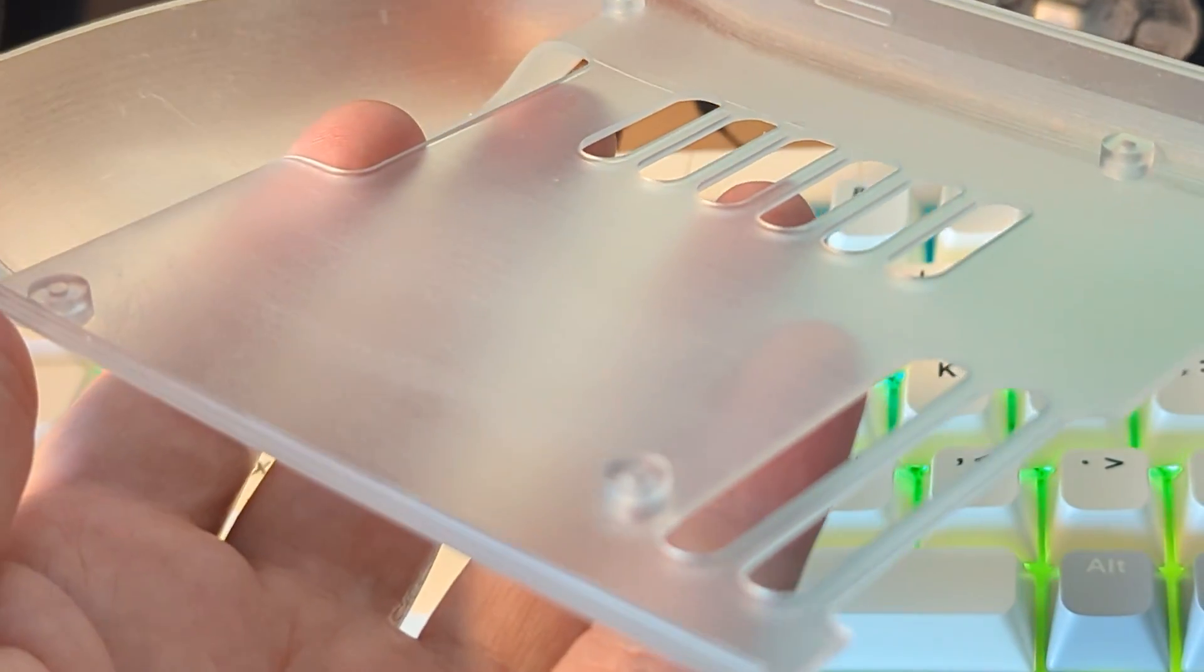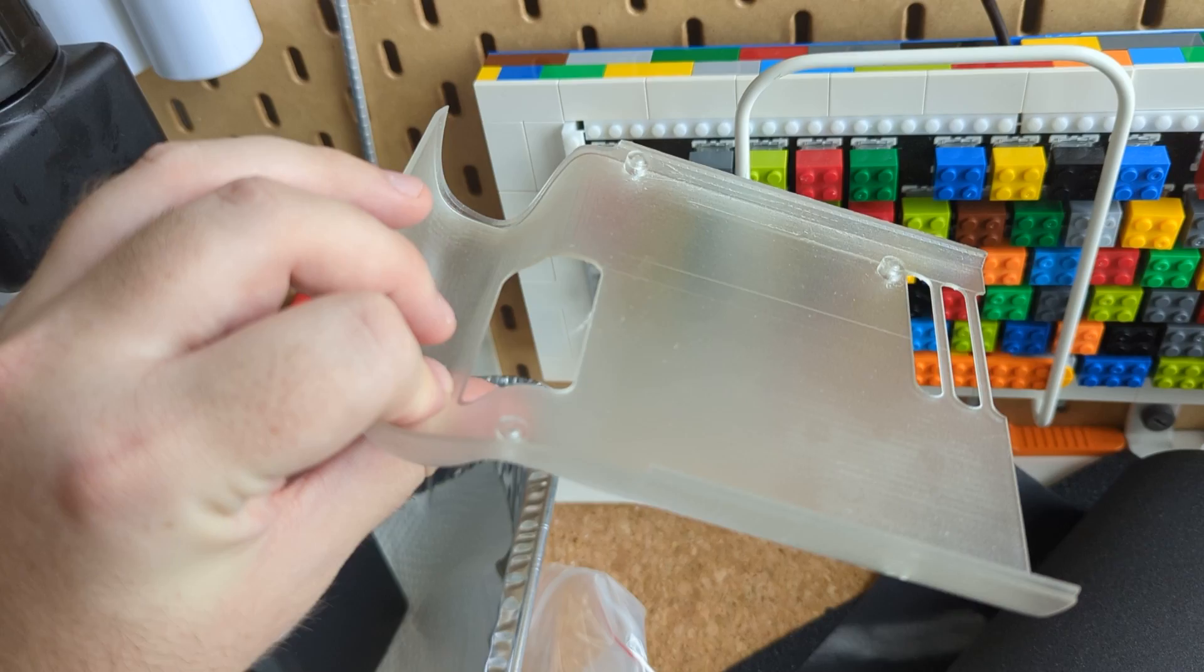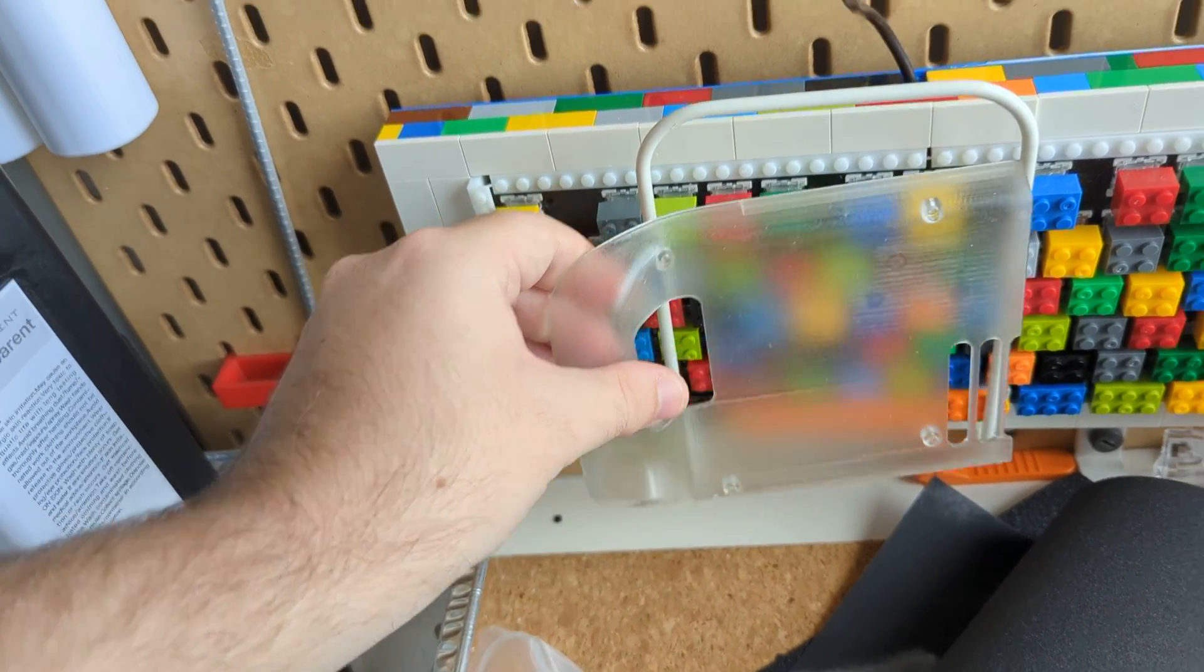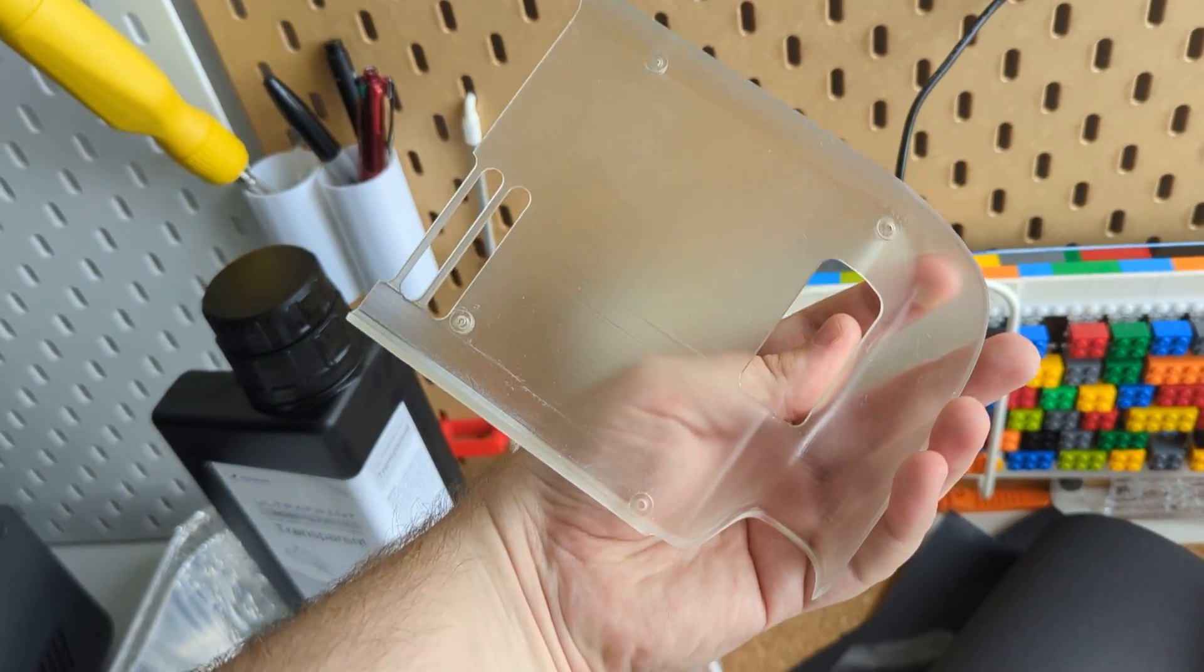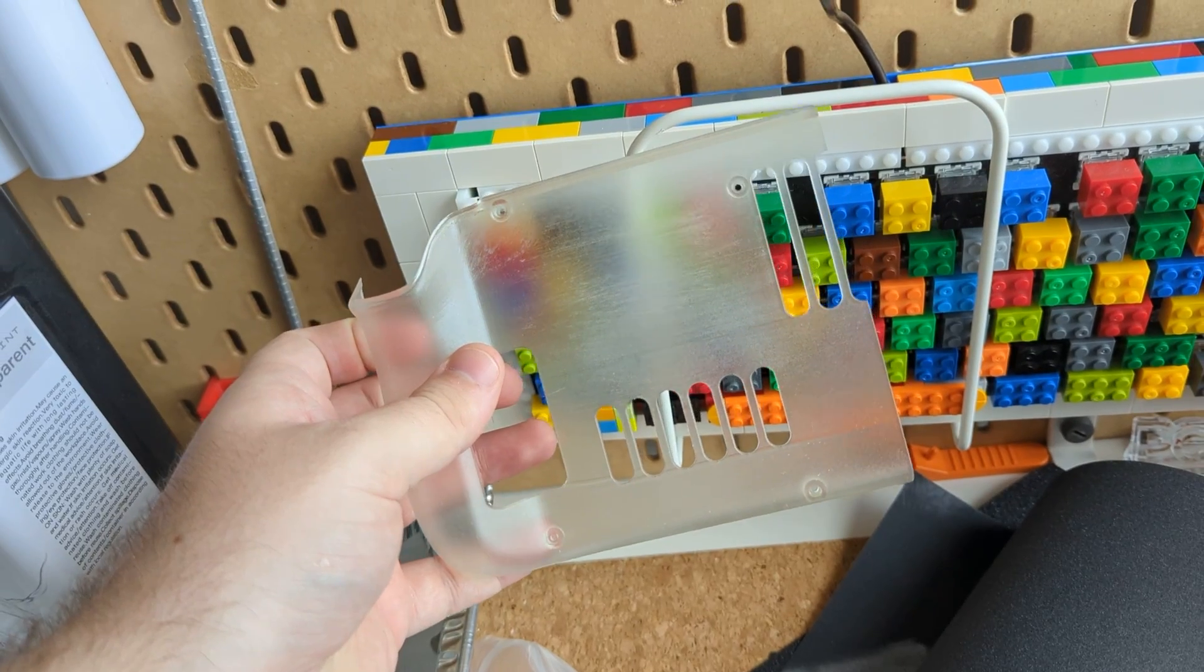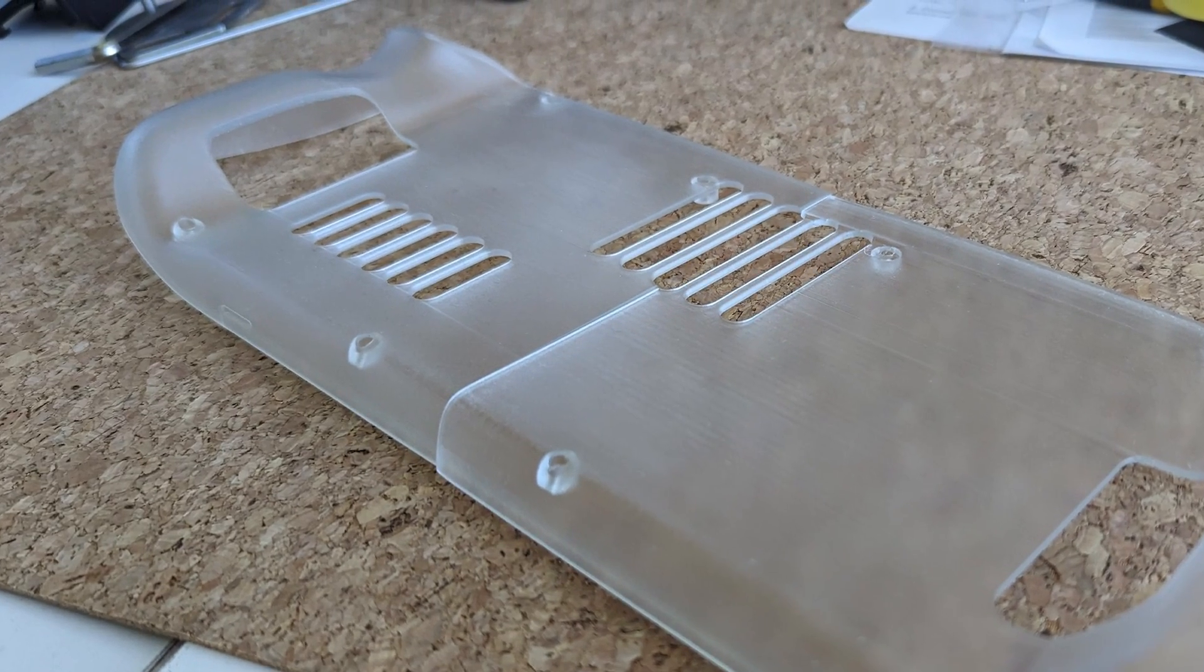But because my sanding wasn't very good in some areas, under the right lighting, you can see the scuff marks from the sandpaper, even though they're impossible to fill. This gives the parts a frosted look and I should have kept sanding to 1200 grit to make it as transparent as possible. If you look past my poor sanding though, the print quality is really nice.